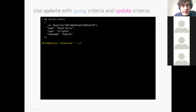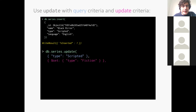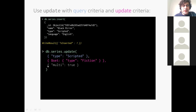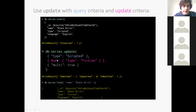Updates combine selection criteria and update actions. The general form is 'db.collection.update(query, update, options)'. For example: 'db.series.update({type: "scripted"}, {$set: {type: "fiction"}}, {multi: true})'. We must specify 'multi: true' to update multiple documents rather than just the first. This replaces 'scripted' with 'fiction' in all matched documents. The result tells us how many documents were matched and how many were modified.